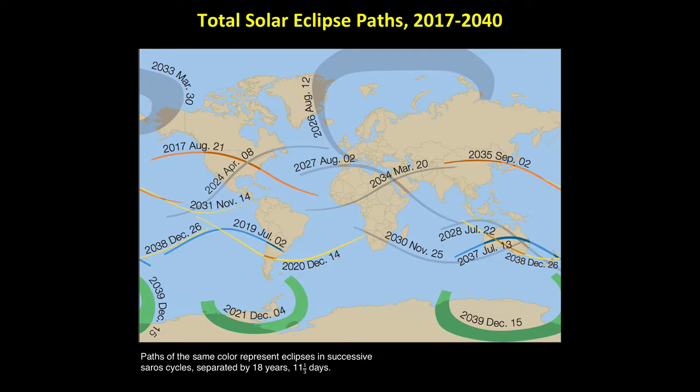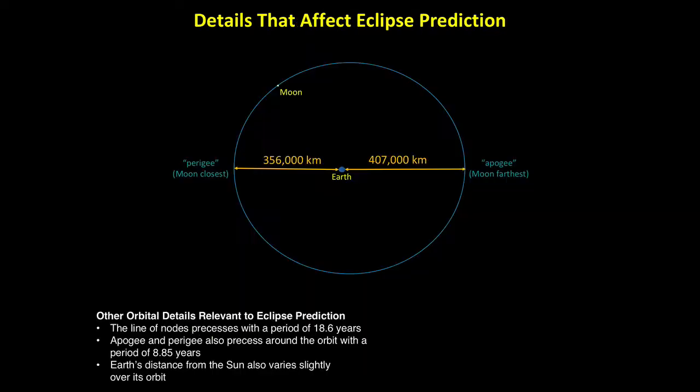Notice that these paths, such as the ones for 2017 and 2035, also move about one-third of the way around the world, a direct result of the one-third day in the Saros cycle. This fact helps explain why ancient cultures had difficulty predicting the precise locations of eclipses, even when they could predict the timing. In addition, ancient astronomers could not always predict the precise type of lunar or solar eclipse, such as whether a solar eclipse would be total or annular, because they weren't aware of orbital details, such as the precise way in which the moon's orbital distance varies over its orbit.